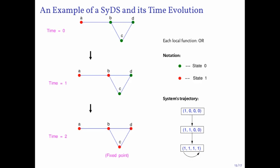This slide shows a simple example illustrating the time evolution of a synchronous GDS. In this system, we have four nodes and each local function is the boolean OR. Initially at time t=0, node A is in state 1 (indicated by red) while the other nodes are in state 0 (indicated by green). At t=1, A remains in state 1, while B changes to 1 since it is a neighbor of A. C and D remain in state 0 due to the OR function. At t=2, all four nodes are in state 1, as C and D have neighbor B which is in state 1. After this, no node will change state — the system has reached a fixed point.